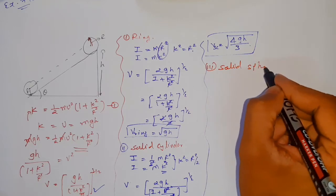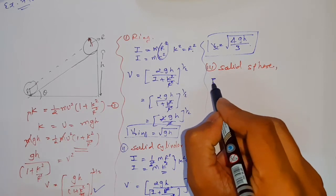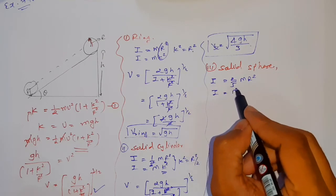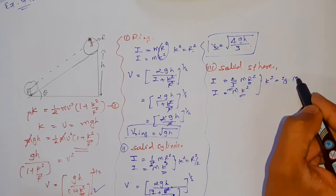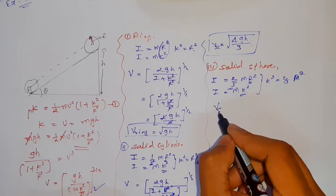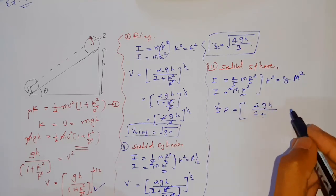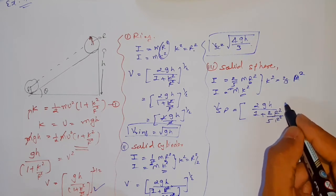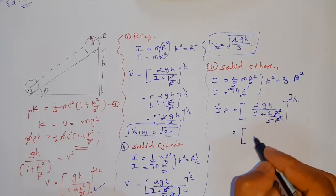For the solid sphere, the moment of inertia is I = 2/5 mr². Comparing with I = mk², we get k² = 2r²/5. Substituting into the velocity formula: v = √(2gh / (1 + (2/5)r²/r²)). The r² cancels out.